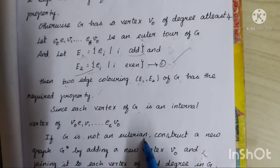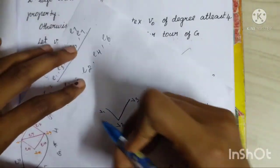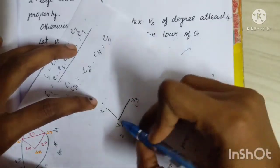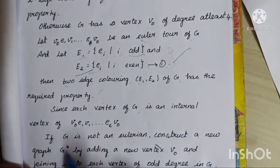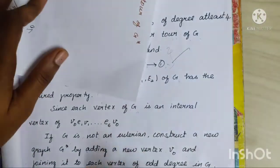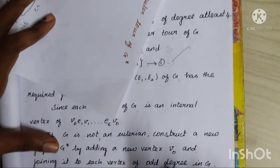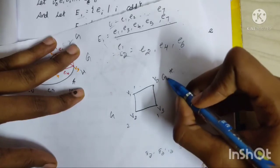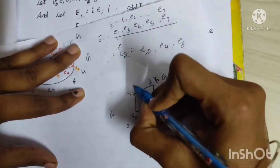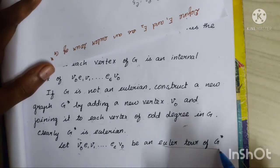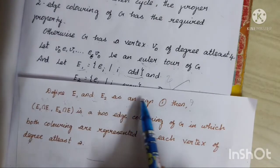If G is not Eulerian, we can add a new vertex to V0, joining it to each vertex of odd degree in G. This creates graph G*. Now all vertices have even degree — degree 2, 2, 2 — so G* is Eulerian. Let V0, E1, V1, ... be an Eulerian tour of G*.